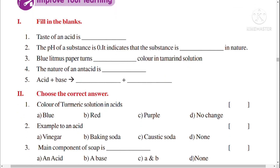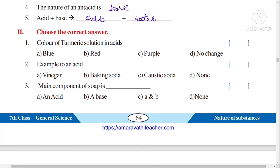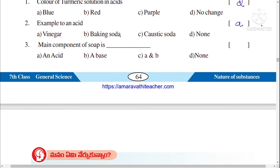Now let's review fill-in-the-blanks. The taste of an acid is sour. The pH of a substance at 0.0 indicates it is strongly acidic in nature. Blue litmus paper turns red in tamarind solution. The nature of antacid is basic. Acid plus base is called neutralization, and it produces salt plus water. Turmeric strips do not change color in acids. An example of an acid is vinegar.